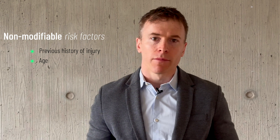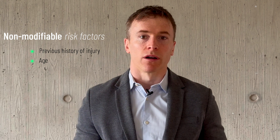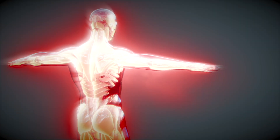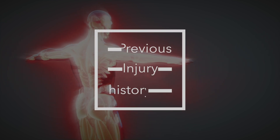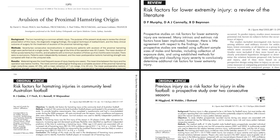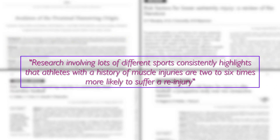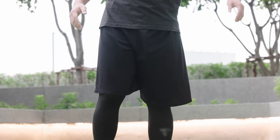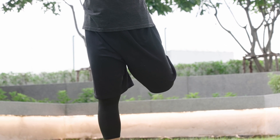Certain non-modifiable risk factors like having a previous muscle injury or being older make you more likely to sustain an injury in the future. A previous muscle injury is a recurrently noted risk factor for future injuries. Research involving lots of different sports consistently highlights that athletes with a history of muscle injuries are two to six times more likely to suffer a re-injury. Most recurrent injuries happen within the first few months of return to sport, but the elevated risk persists over time.